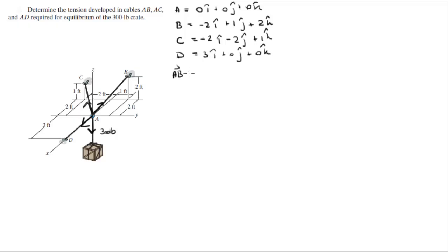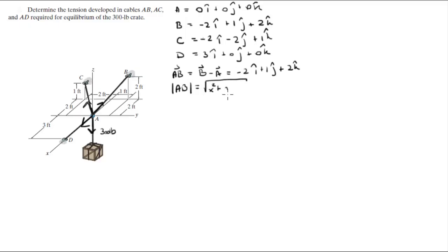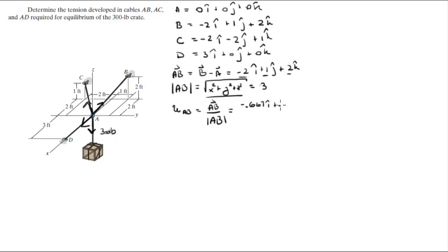Let's start with unit vector AB. To find unit vector AB, you need to find vector AB first, which is B minus A, giving -2i + 1j + 2k. The magnitude of AB is the square root of the x-component squared plus the y-component squared plus the z-component squared, which equals exactly 3. So the unit vector AB is the vector divided by its magnitude: -0.667i + 0.333j + 0.667k.